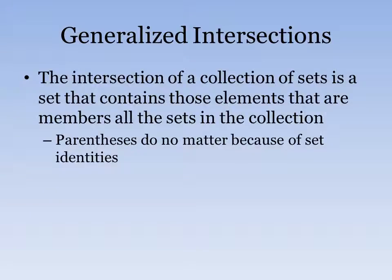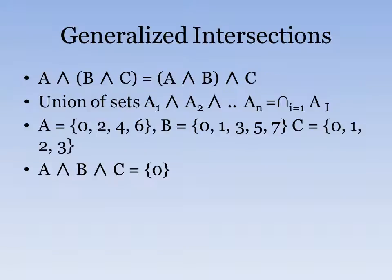So we also have something called generalized intersections. And the intersection is a collection of the set that contains all the elements that are members of all the sets in the collection. And just like in generalized union, the parentheses do not matter because of set identities. So as you can see here, we have the intersection of A, of set A, set B, and set C. But we switch the parentheses around. And they're the same just because of generalized intersection set identities.